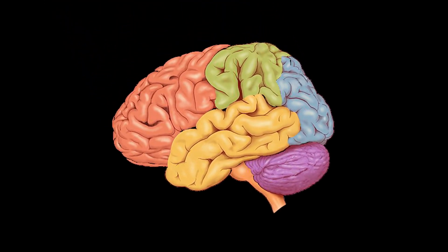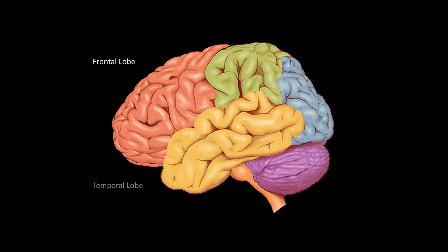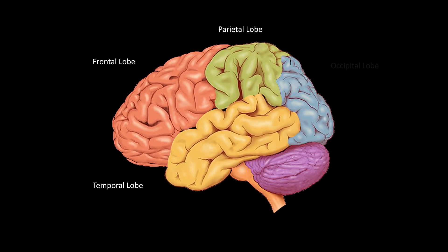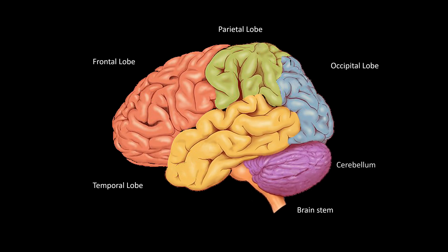Almost everybody who came in contact with some neurobiology might remember the basic brain areas. The frontal, temporal, parietal, or occipital lobe might come to mind. Perhaps even the brainstem and cerebellum.